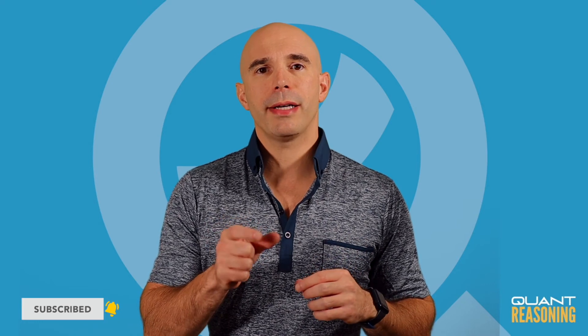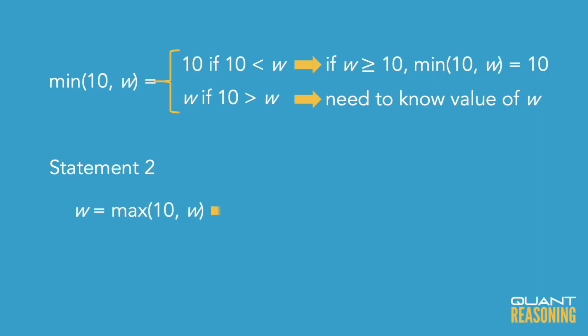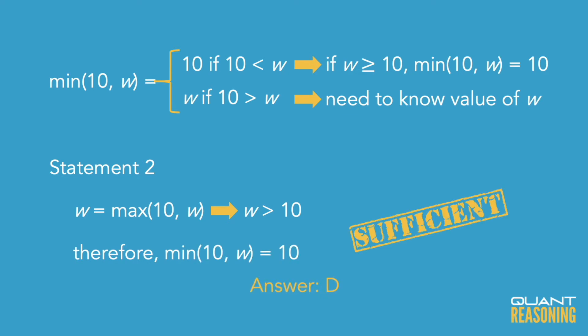Statement two says that of 10 and w, the maximum, the bigger number between 10 and w is w. So then we know that the smaller number between 10 and w is 10, and that's the answer to the question. So since each statement is sufficient on its own here, the correct answer is D.